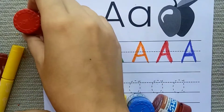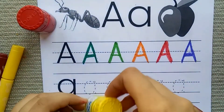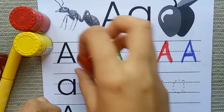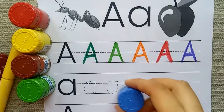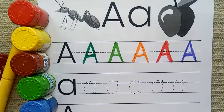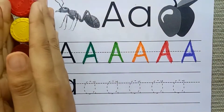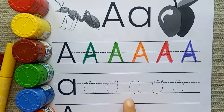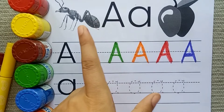Alphabets! Red color, yellow color, brown color, green color, blue color, and orange color. Alphabets. A — A for apple.